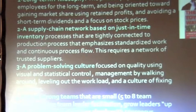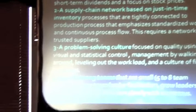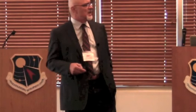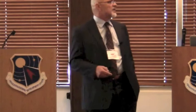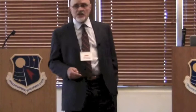The fifth item is lean production. I'll use Jeffrey Liker's picture here because he has a nice summary in his book The Toyota Way. Four basic principles: one, a long-term philosophy — hiring workers for the long term, producing for the long term, not being concerned with short-term stock prices but more concerned with market share and expanding employment. Second, a supply chain network based on just-in-time inventory coordinating suppliers. Third, a problem-solving culture that focuses on quality. And four, the use of strong teams, especially teams with five to eight members.